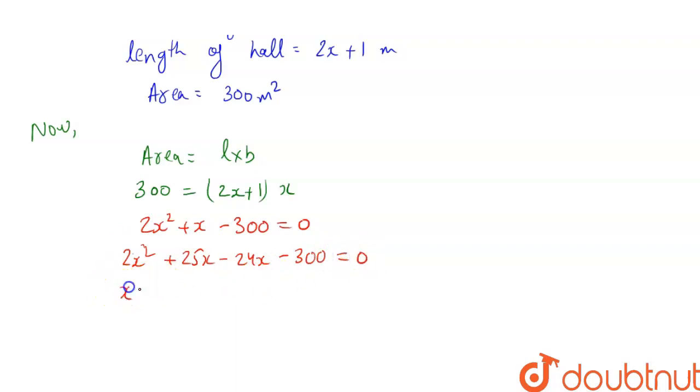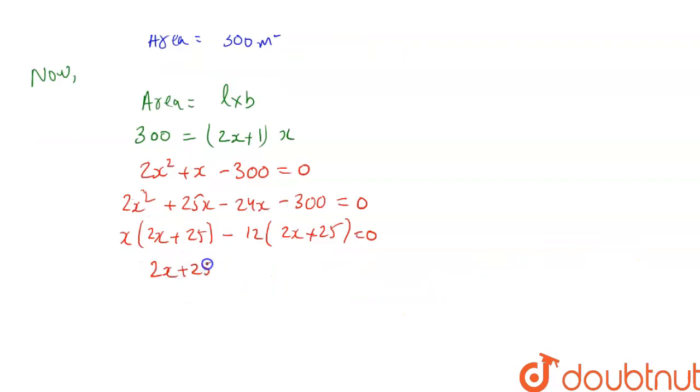If we take common here, x times (2x plus 25) minus 12 times (2x plus 25) equals 0. The factors are (2x plus 25) and (x minus 12).